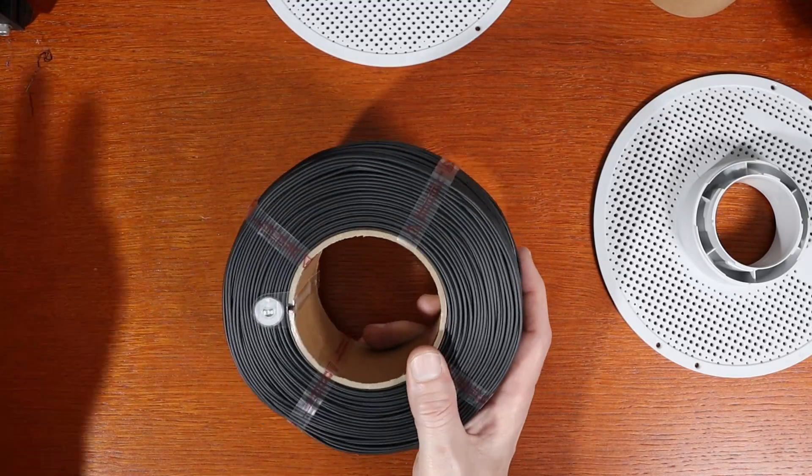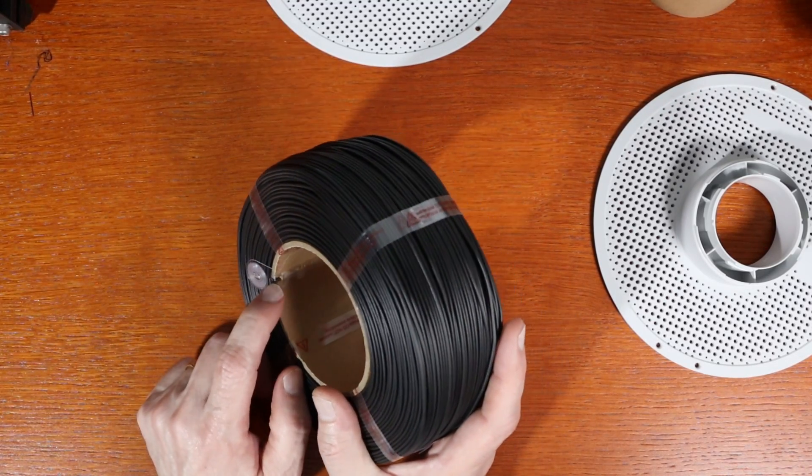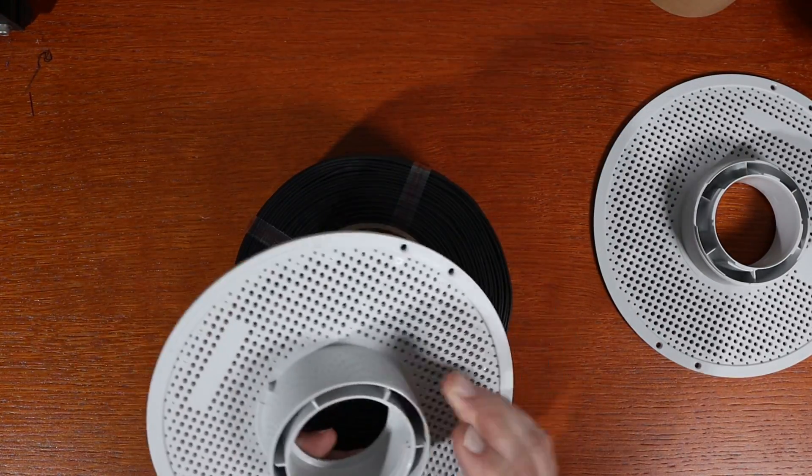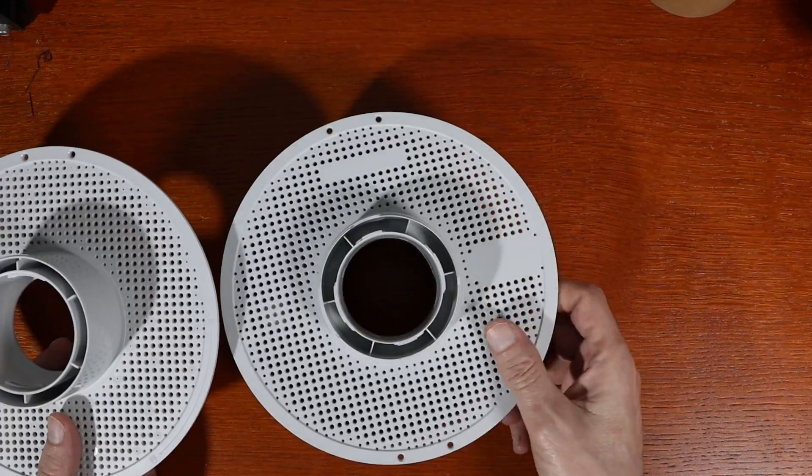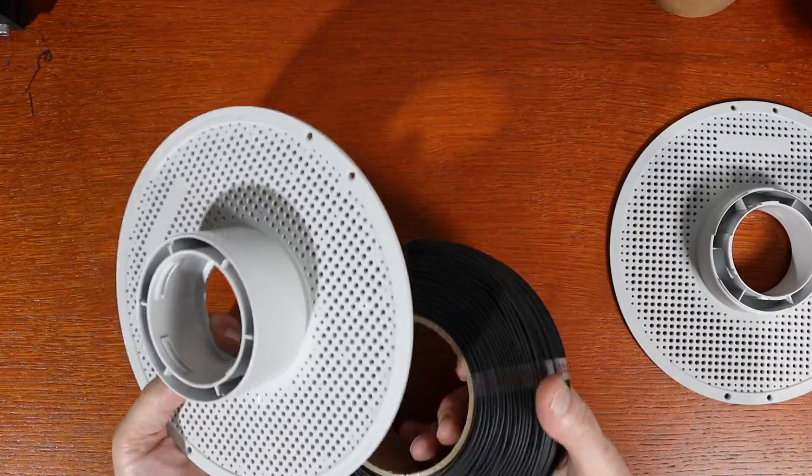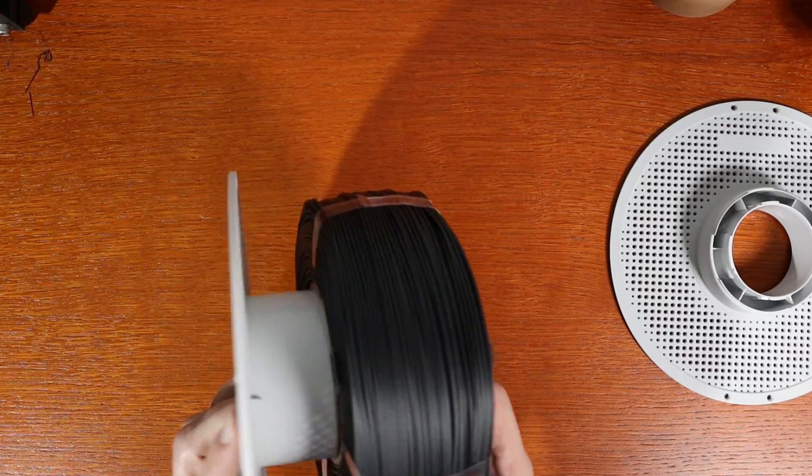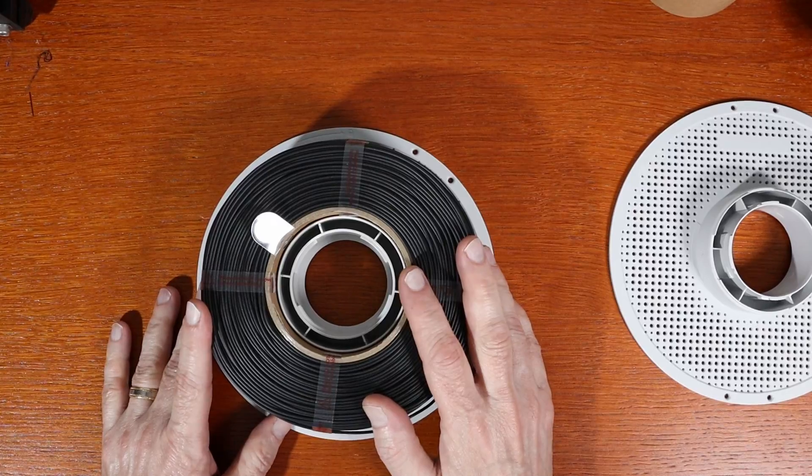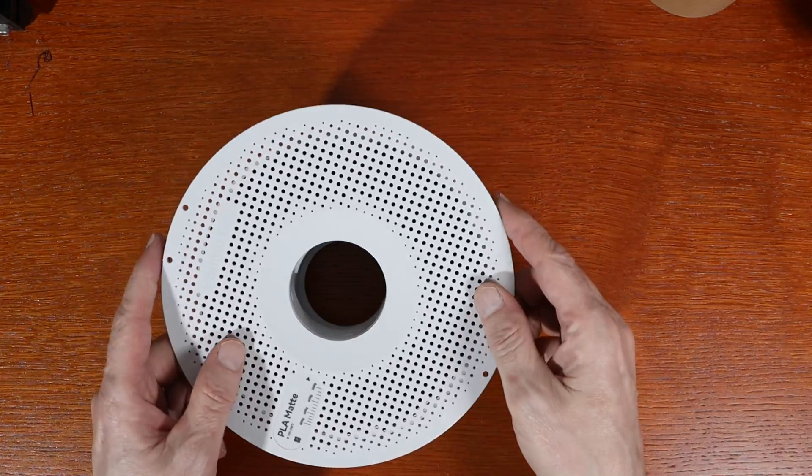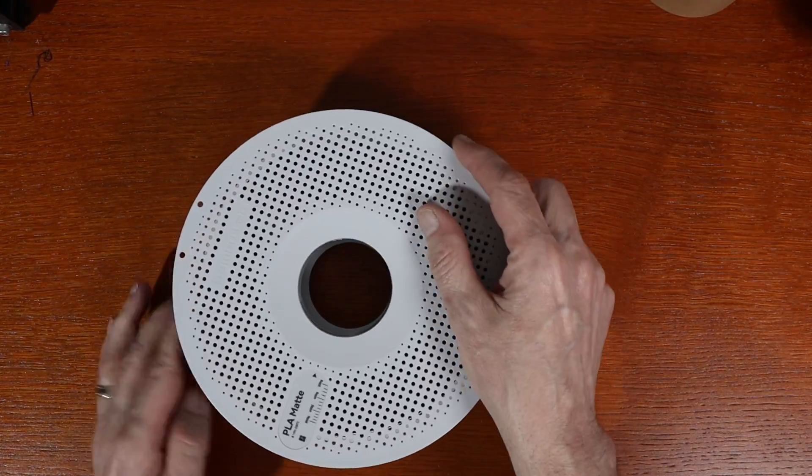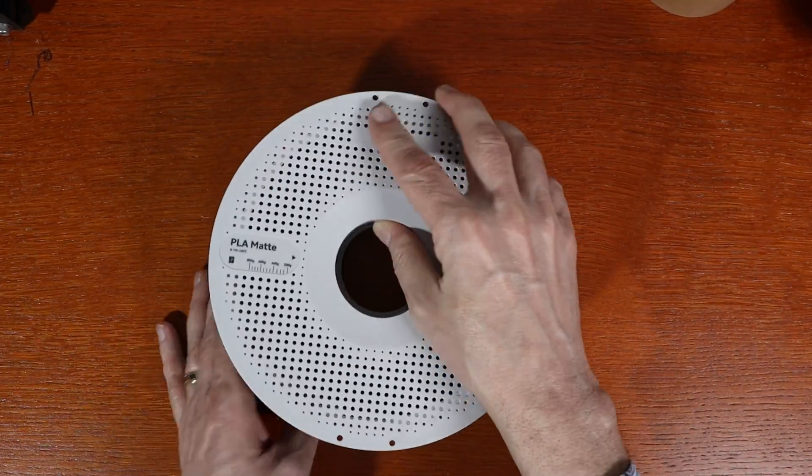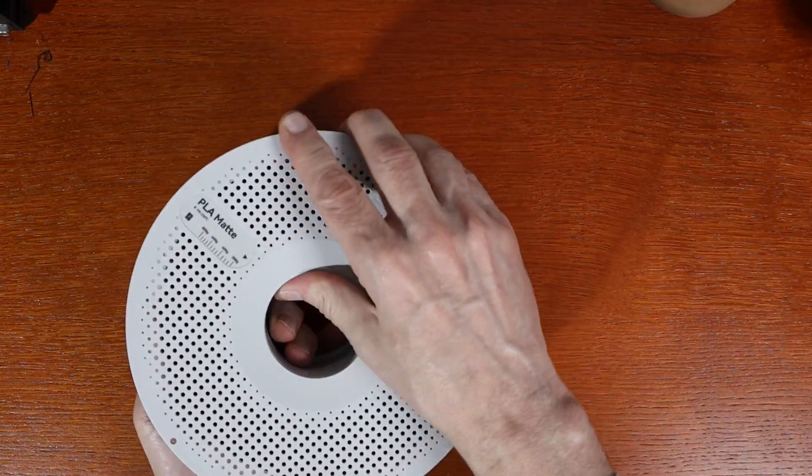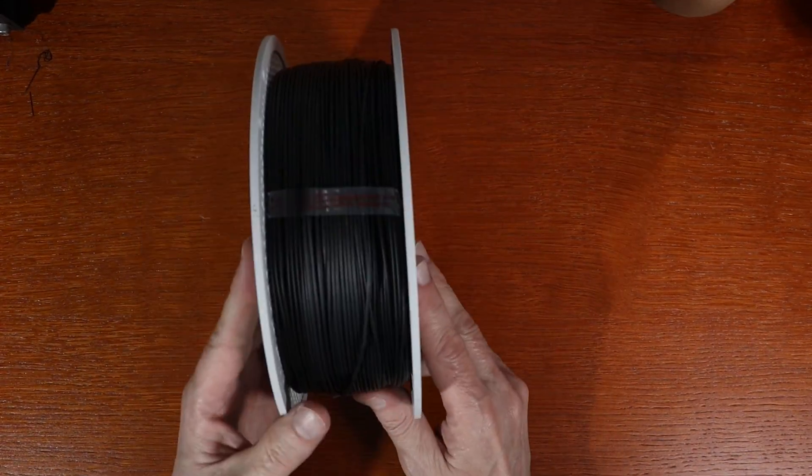Now one side, which happens to be this side, has a notch in it. And so that notch has to line up with this side. The other side does not have a notch. That's pretty much the most difficult thing about this. So I'm going to make sure that the notch aligns, which it does. And now I can put the other half on before I do anything else. It takes a little bit of work to get it in place, but there you go.